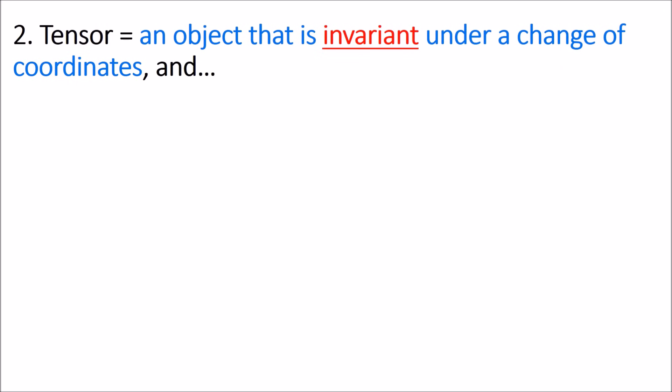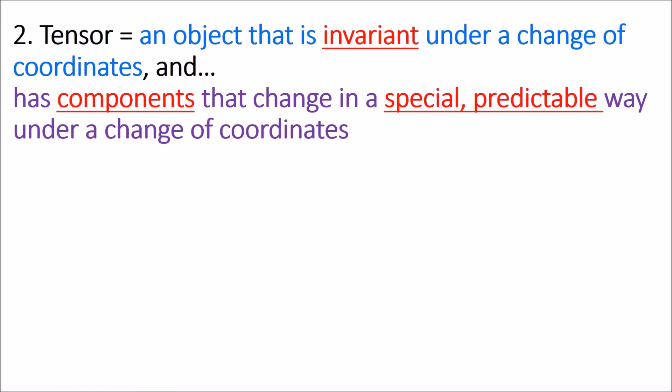Let's try again. Here's another attempt at a definition. A tensor is an object that is invariant under a change of coordinates and has components that change in a special predictable way under a change of coordinates. That's certainly a mouthful. So what does that mean?